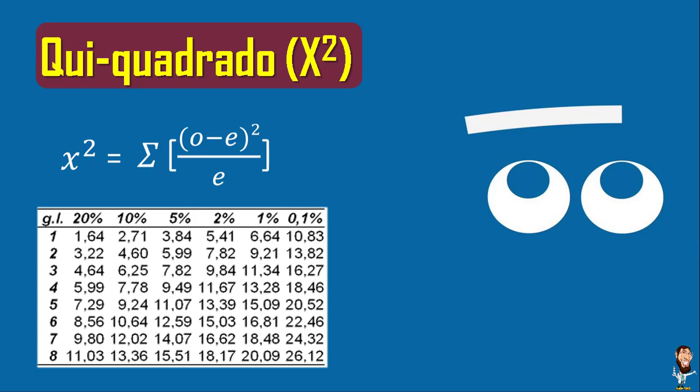O teste do Q² vai exigir uma tabela. Essa tabela geralmente é fornecida em provas, então não há necessidade de decorar. Essa tabela traz um negócio chamado GL, que é o grau de liberdade. Você calcula o grau de liberdade vendo o número de classes e diminuindo uma unidade. Vamos adotar como padrão um alfa de 5%, que seria a nossa porcentagem compatível para erro.